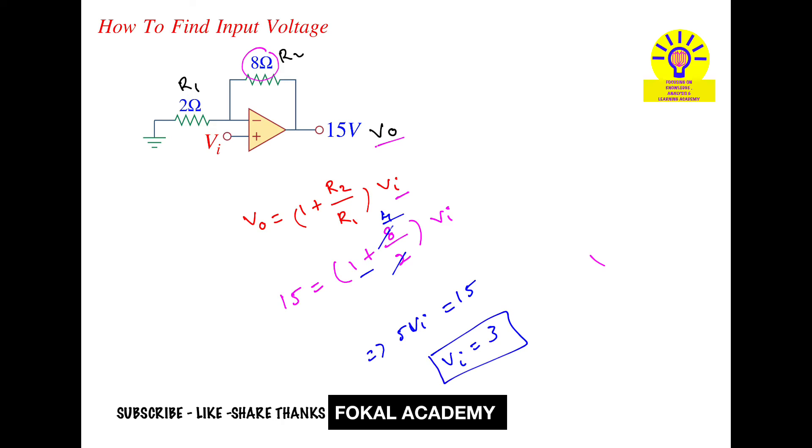So whenever the input voltage is given as 3V, we will get output voltage as 15V for the given circuit.